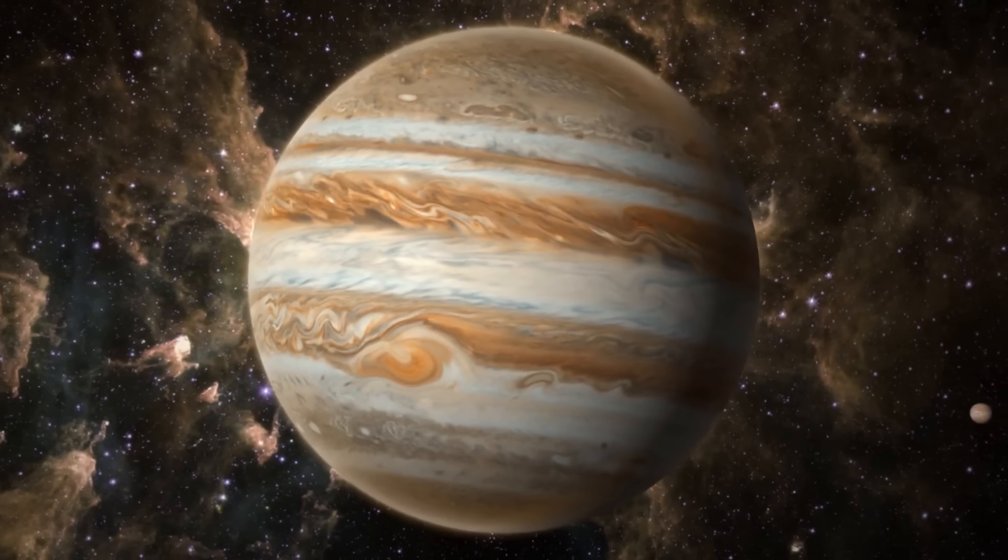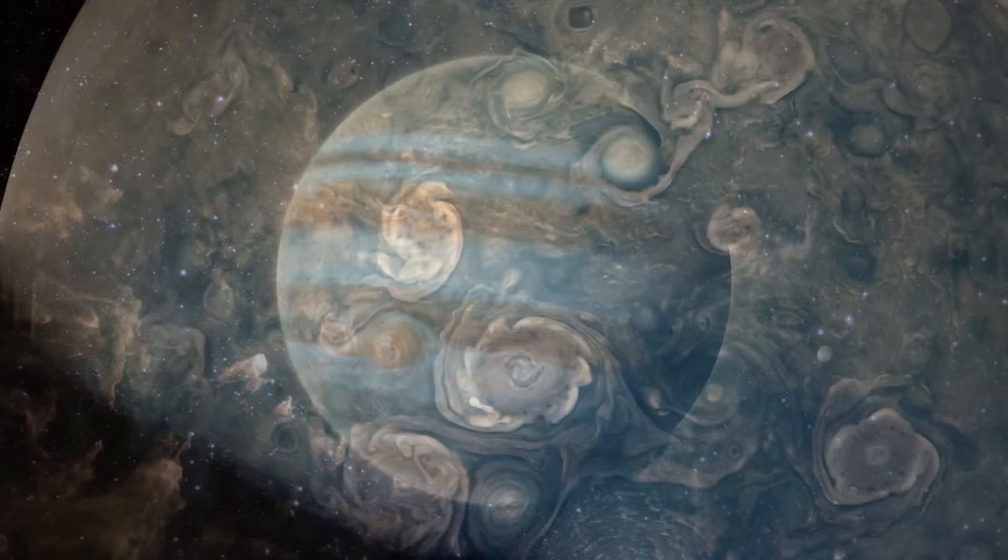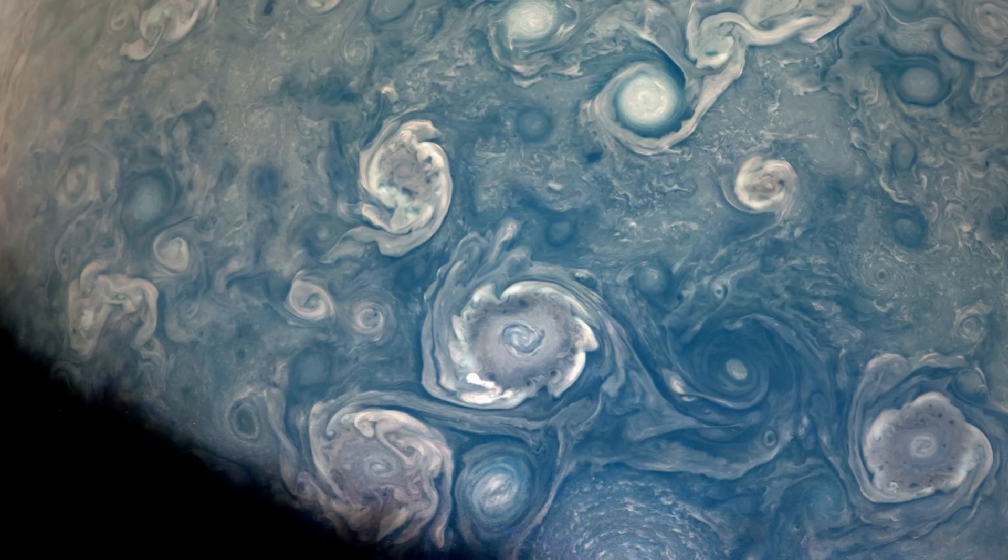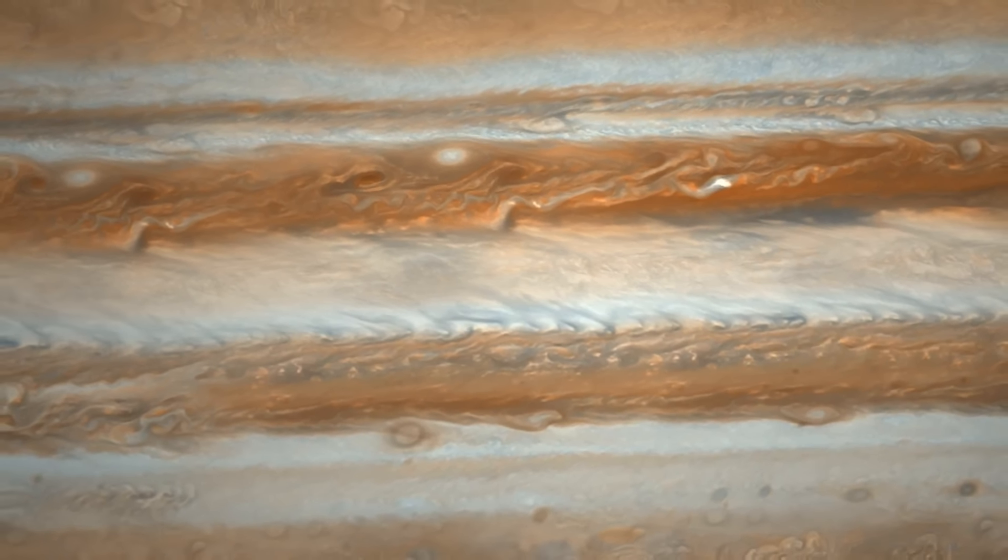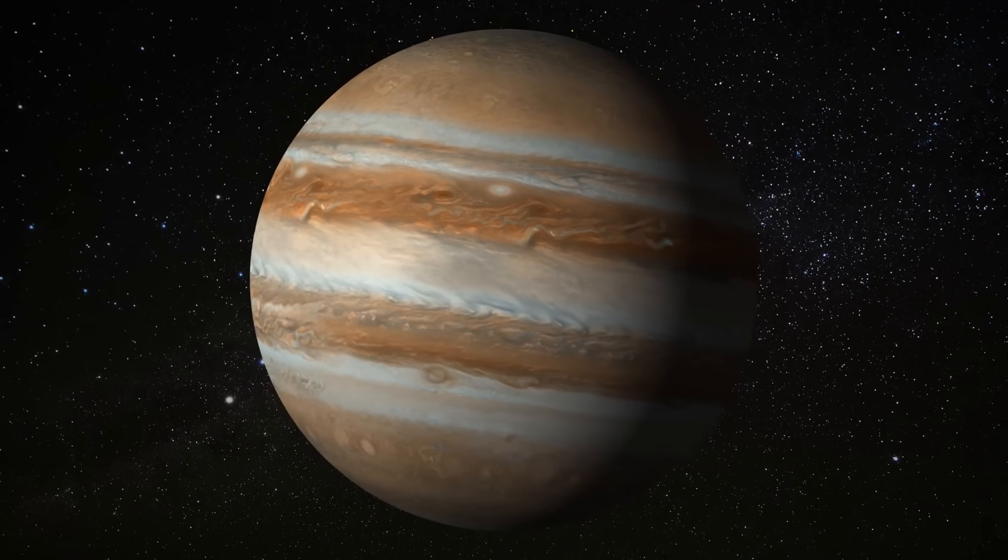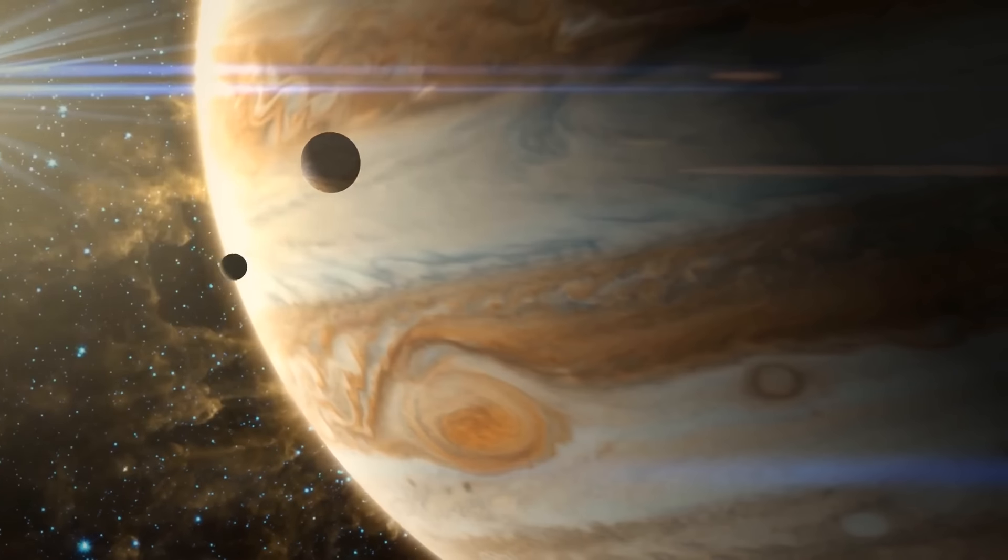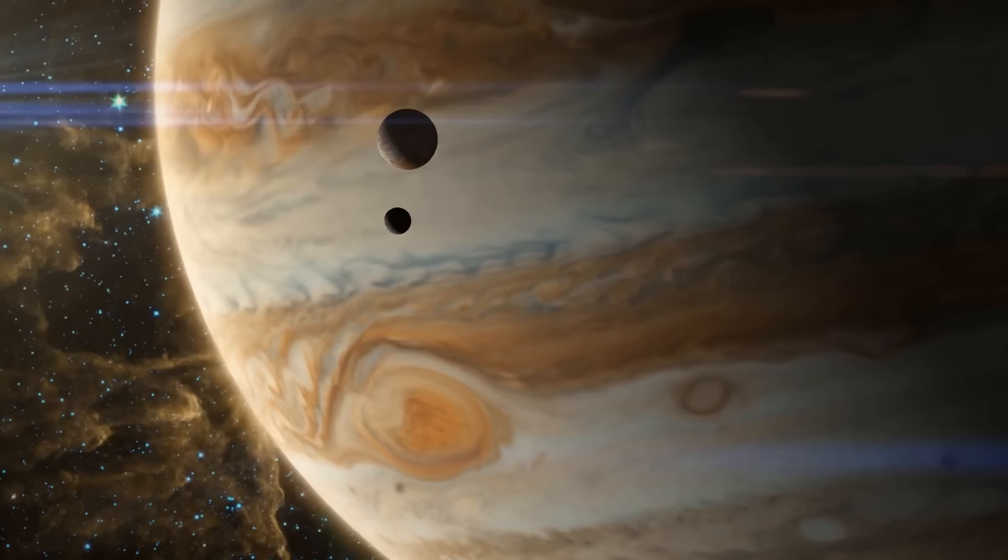Now, because Jupiter has such a massive atmosphere and a weather system similar to Earth's, it experiences some extraordinary storms. So even though these stripes may look calm and peaceful, they're actually part of a wild weather system - like a never-ending storm party happening there. These belts and zones move in opposite directions around the planet. The belts go against Jupiter's rotation, like going against the flow, while the zones go with it, joining the dance.